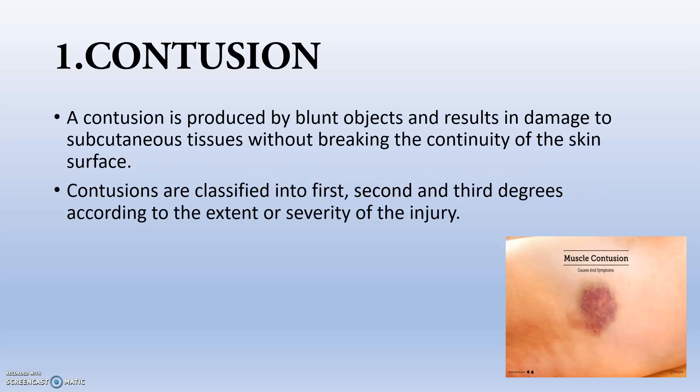A contusion is produced by blunt objects and results in damage to the subcutaneous tissue without breaking the continuity of the skin surface. A small hematoma-like hemorrhage under the subcutaneous tissue will be evident. Contusions mainly occur due to blunt objects — muscle contusion is very common. They are classified into first, second, and third degrees according to the severity or extent of the injury.